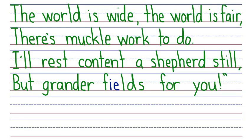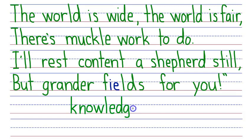Did you see the word with the DGE phonogram? It was knowledge. Write this down: knowledge is spelled with a K — a phonogram that says nn — then O, W, L, E, D, G, E. Knowledge means facts, information, and skills acquired by a person. Right now you're acquiring knowledge about the English language. You know a lot, but you can always learn more. One way to keep learning is to look up words you don't know in the dictionary. For example, you probably don't know what the word muckle means. Muckle is another word for much, so the line 'there's muckle work to do' just means there's much work to do.